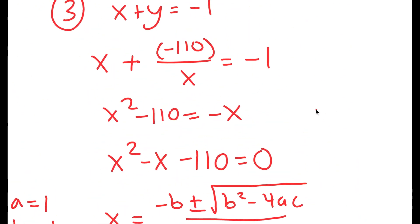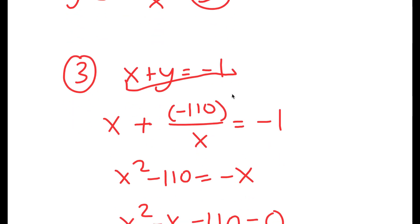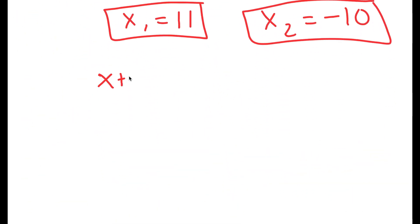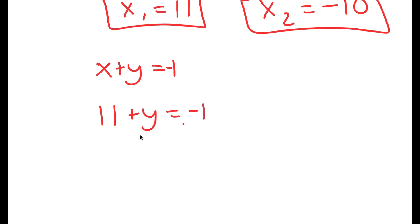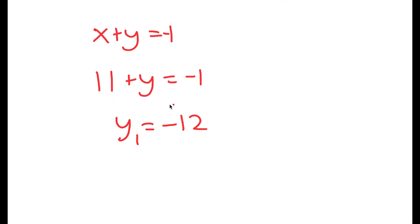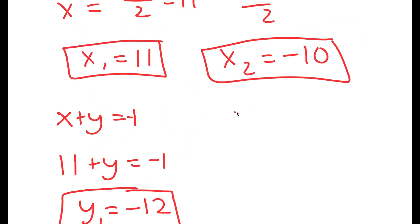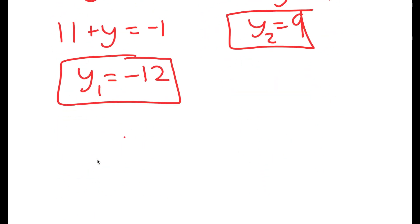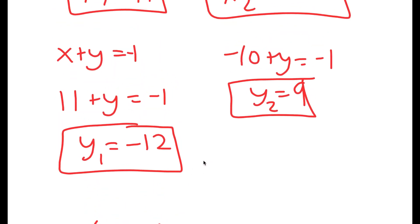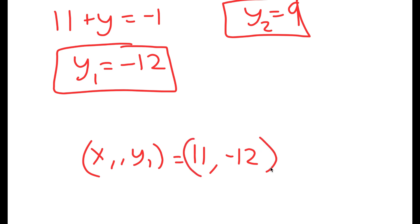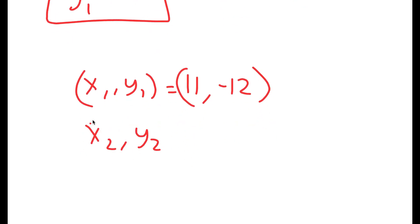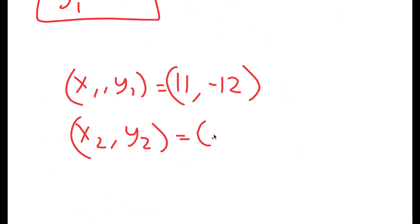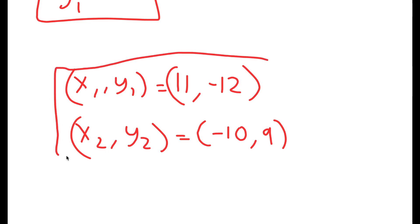Going back to x plus y equals negative 1: when x equals 11, y equals negative 12. When x equals negative 10, y equals 9. So my two solutions are (x₁, y₁) equals (11, negative 12) and (x₂, y₂) equals (negative 10, 9).